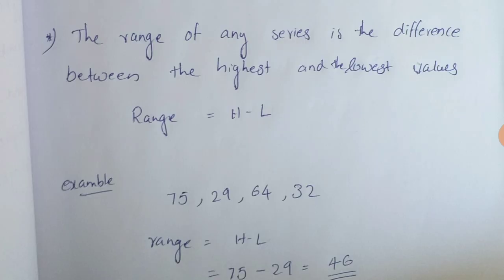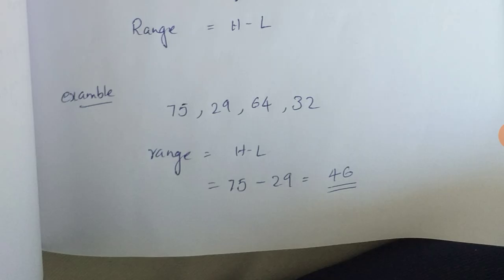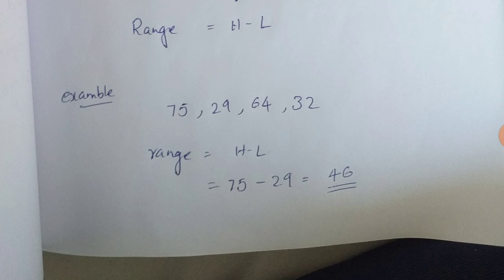Let's take an example with the numbers: 75, 29, 64, 33. The formula for range is: Range = Highest value minus Lowest value. The highest value is 75 and the lowest value is 29. Therefore, Range = 75 − 29 = 46.